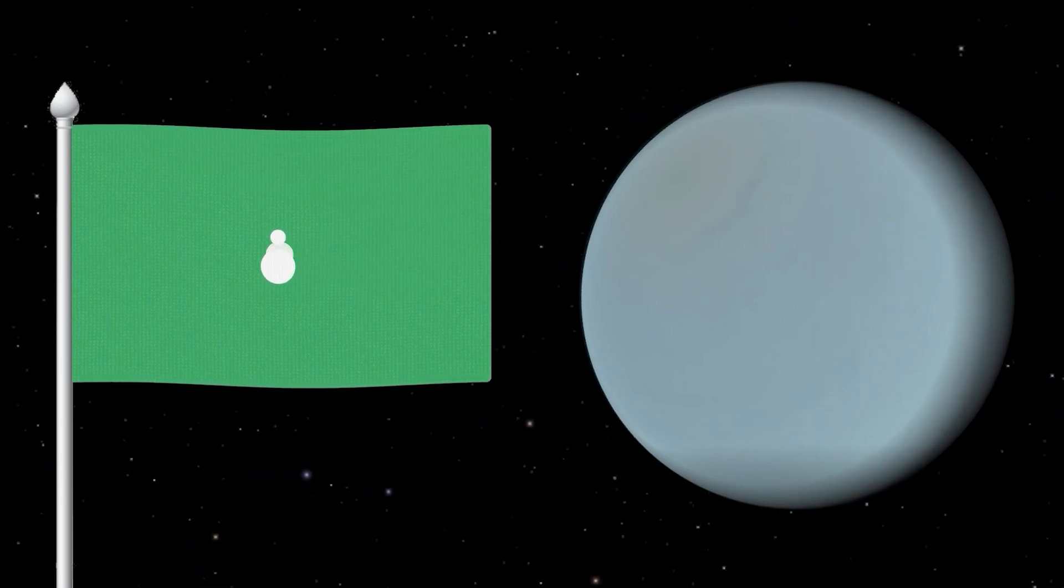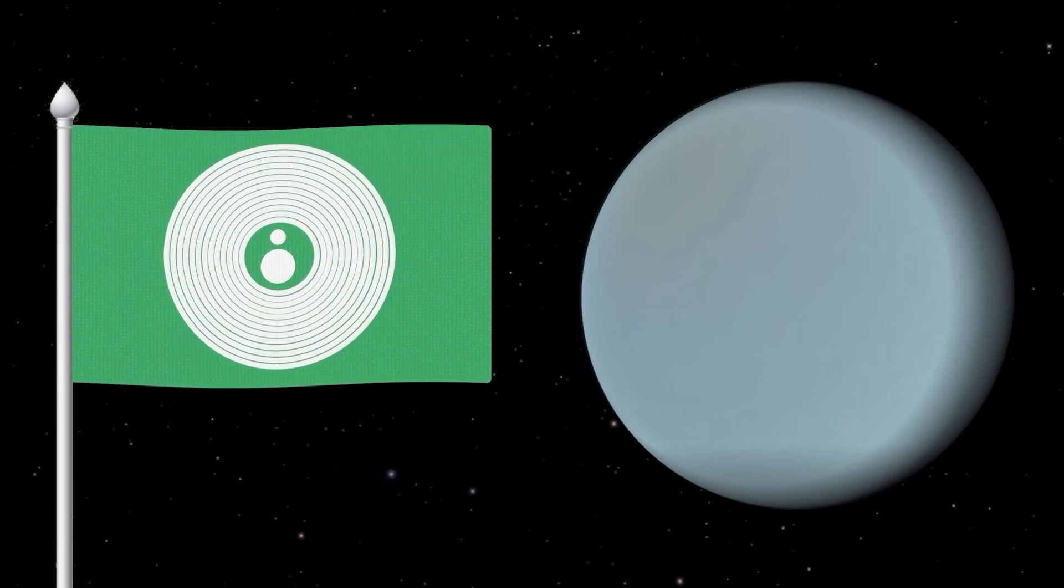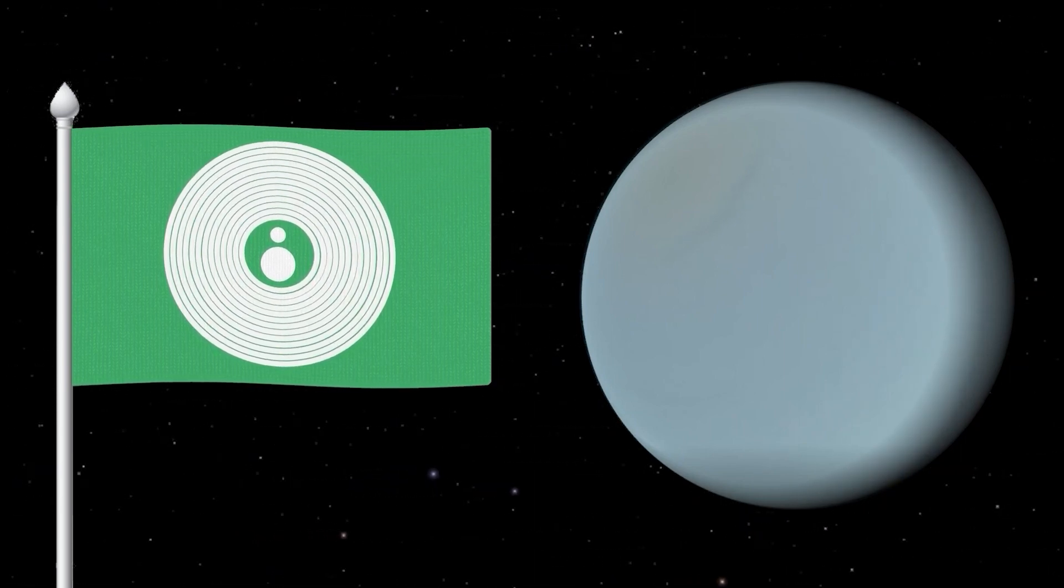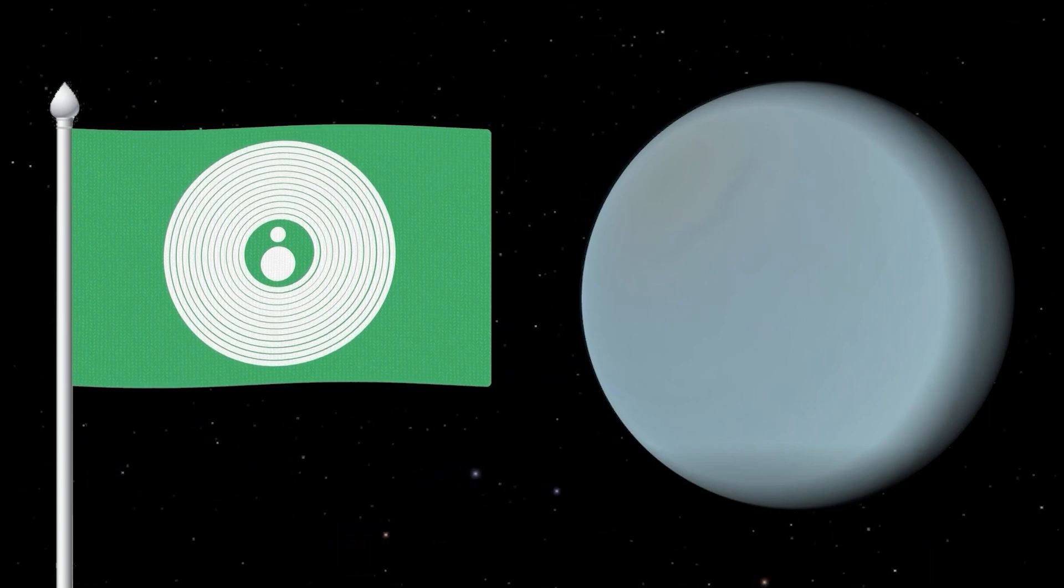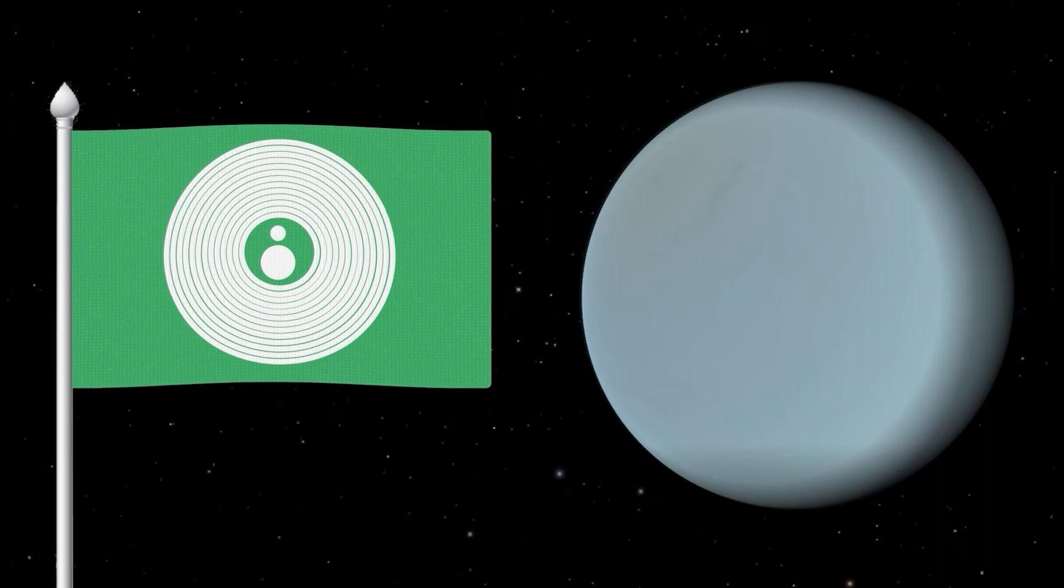Around Uranus are 13 rings which were formed from the debris from the collision of two large moons, or icy bodies. This flag is incredibly unusual and cool. I hope that someday the planets will have their own flags and this will be a possible option.